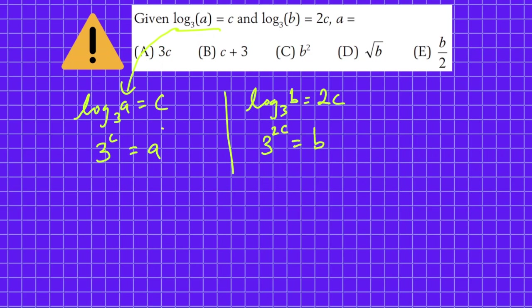Now you might have a question: why am I writing log of A to the base 3 equals C as 3 raised to power C equals A? So I'm giving you a very simple example to understand this. Let me use another marker here. For example,